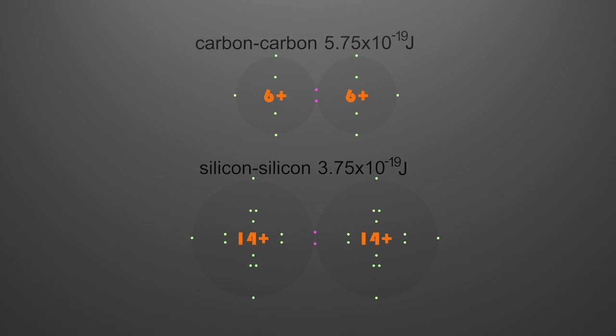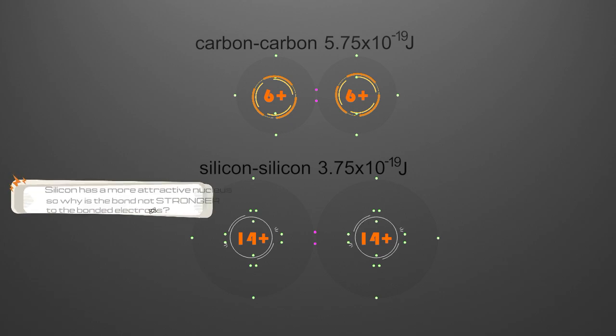But there does appear to be a fly in the ointment. If silicon has the weaker bond, then how come it's got the highest nuclear charge? Why is the bond not stronger in silicon? It's more attractive isn't it, that nucleus?